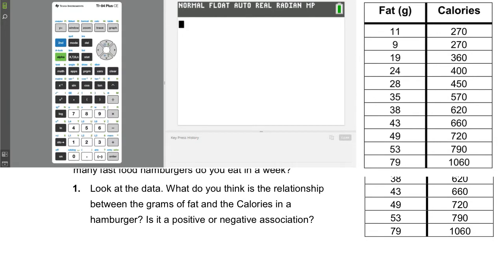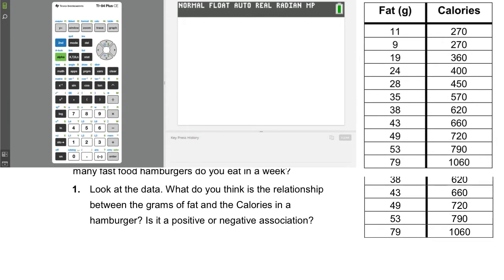Now, let's take a look at this data. So number one, what do you think is the relationship between the grams of fat and the calories in a hamburger? So first, let's just get familiar with this data. We see that the fat is increasing as we read the table going down, except for just one point. Notice that from 11 to 9 it goes down slightly and then it goes back up. And then the calories, they all either stay the same or increase as you go down the table. Okay. Interesting.